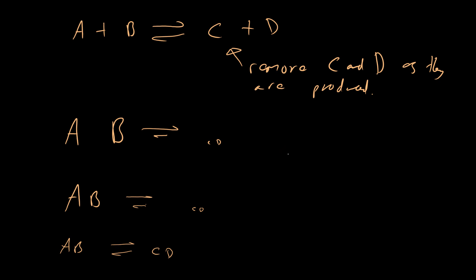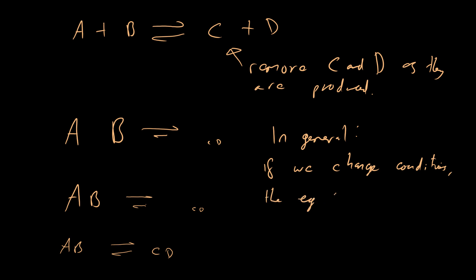This tells us a general principle: when we change the conditions of an equilibrium, the equilibrium will move to try and reduce or cancel out that change. When we remove C and D, we reduce their concentrations, so the equilibrium moves to increase those concentrations, cancelling out the change.